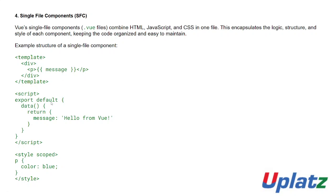In the script block (JavaScript), export default has a data function that returns message: 'Hello World from Vue'. Then the script is closed. In the style block, 'style scoped' means this CSS is private to this file only — other files don't have this scope. Here 'p { color: blue }' means the message 'Hello from Vue' will be written in blue color.